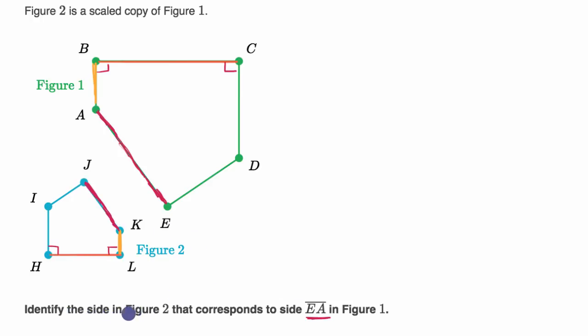So the side in Figure 2 that corresponds to EA in Figure 1 is going to be KJ, or we could say side JK.